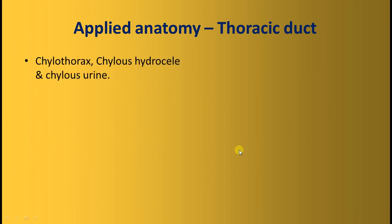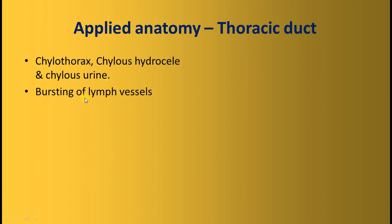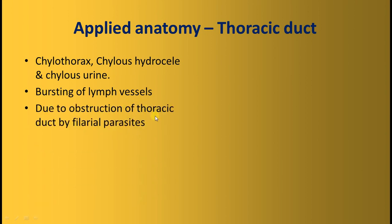Applied anatomy of the thoracic duct: chylothorax refers to accumulation of chylous fluid in the thorax. Related conditions include chylous hydrocele in the testis and chylous urine — all caused when lymph vessels are infected by filarial parasites, which multiply and obstruct lymph drainage, causing lymph vessels to rupture and allowing lymph to accumulate in the thorax, testis, or mix with urine.